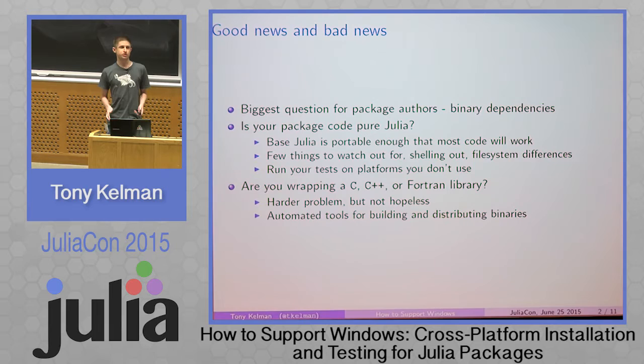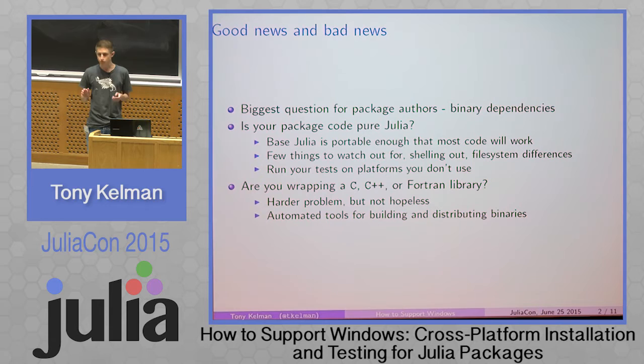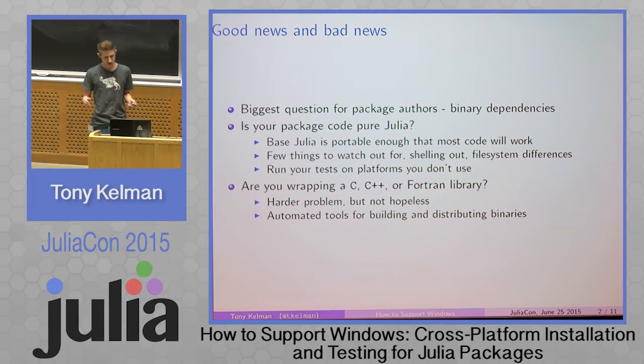So I have good news and bad news for package authors and potentially users. The biggest question is: does your package have binary dependencies or not? Julia has excellent C, Fortran, and Python interoperability. But if your package code is pure Julia, then you are probably almost done. Base Julia, because of a lot of work — Kano initially ported it, and Jameson and Isaiah Norton did a lot of work — works relatively well. If Julia was not functional on Windows at all, I wouldn't have started using it about a year and a half ago. Most things should work; there's a handful of things to watch out for.